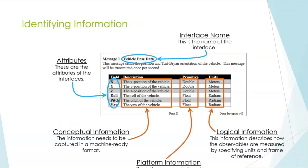Let's start identifying some of the information that we see in the ICD. The blue circles here are some of the names that we'll use when we're actually building out our data model content. We would define our interface name as the same name as the message, vehicle pose data. On the left, we have the attributes of the individual interfaces. We may send an X, Y, Z, and a roll pitch yaw.